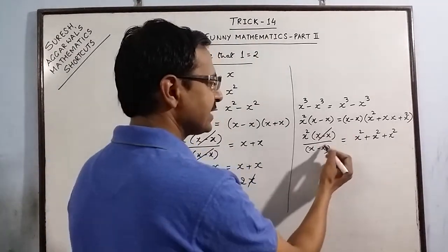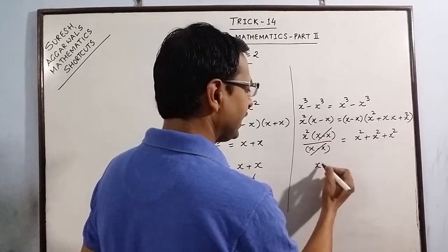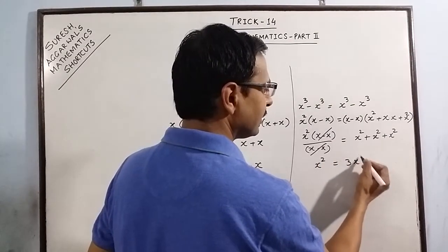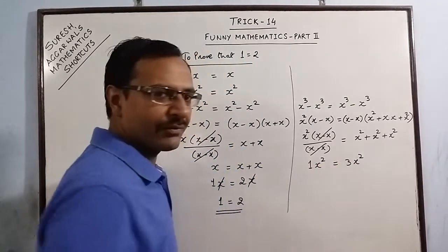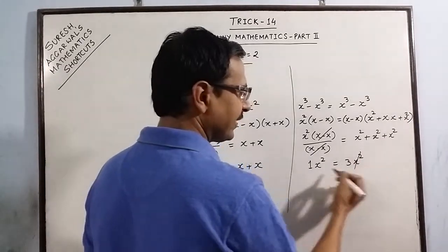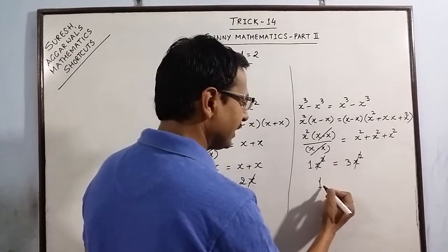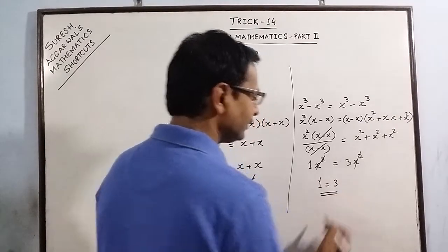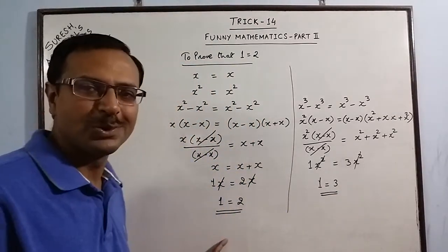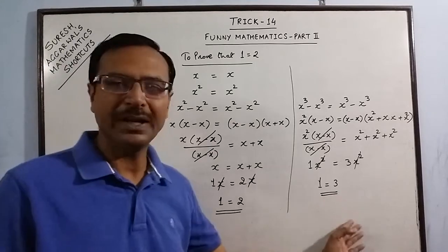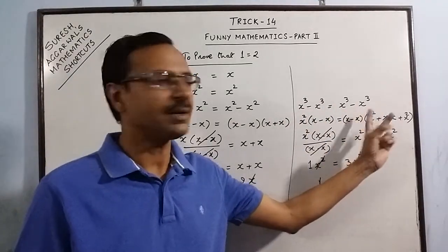The common factor (x − x) cancels out, leaving x² = 3x². The x² common factor cancels out again and I am left with 1 = 3. So 1 = 2, 1 = 3 — similarly, if you take larger powers, the same pattern continues.